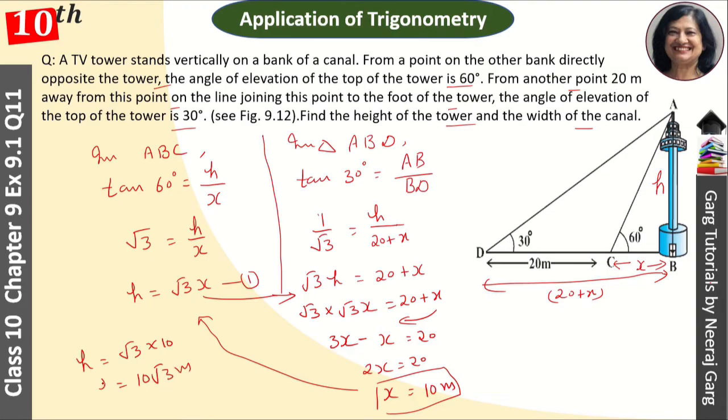Height of the tower equals 10√3 meters and width of the canal equals 10 meters.